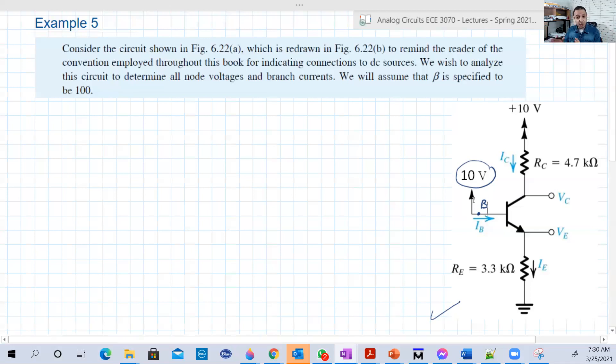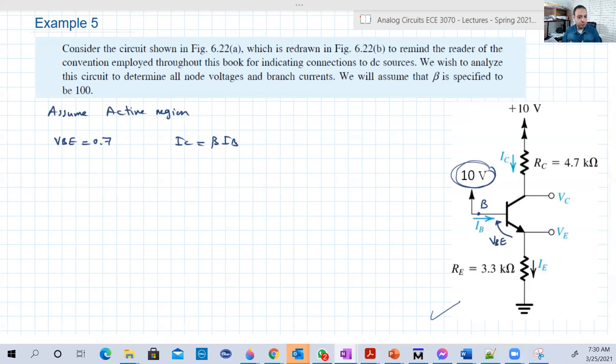We're going to again assume active region. Looking at the circuit, the VBE here, the voltage between the base and the emitter, there is a source that can give it the 0.7, which is basically the 10 volts here. So let's assume active region. If we are in the active region, VBE is 0.7 and we know that IC should be equal to beta IB. The base here is basically 10 volts. Then how about the emitter? Since VBE is equal to 0.7, so this is basically equal to VB minus VE. So VE will be 10 minus 0.7, which would be 9.3 volts.